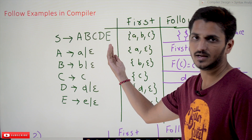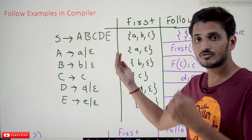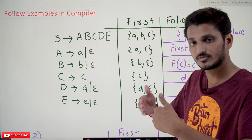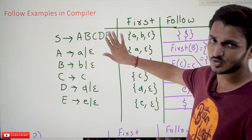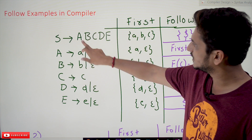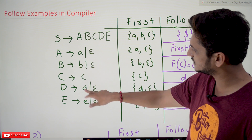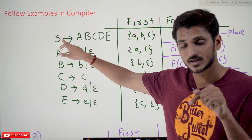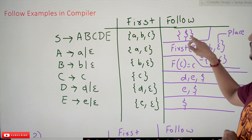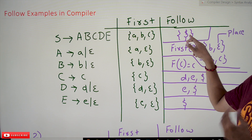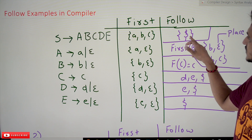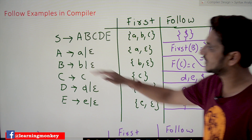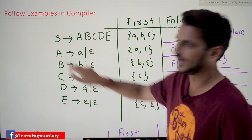Based on these FIRST symbols we have to calculate the FOLLOW symbols. So, FOLLOW of S — on the right-hand side, wherever you find S, after that what symbol is there, that we calculate as FIRST of that symbol. We don't find S on the right-hand side anywhere. As we discussed in our last class, for the first non-terminal we add a FOLLOW symbol called dollar. So the FOLLOW of S is the dollar symbol.